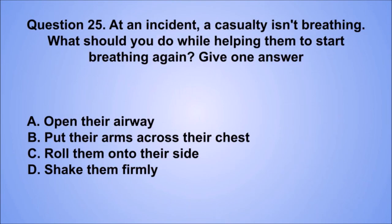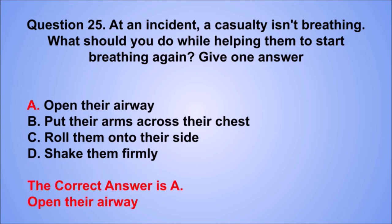Question 25. At an incident, a casualty isn't breathing. What should you do while helping them to start breathing again? Give one answer. A: Open their airway. B: Put their arms across their chest. C: Roll them onto their side. D: Shake them firmly. The correct answer is A: Open their airway.